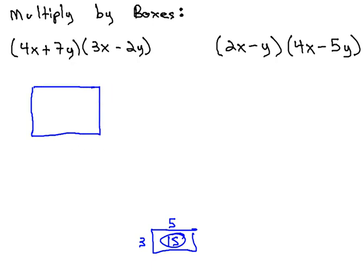Here, we're multiplying 4x plus 7y times 3x minus 2y. As we do that, we'll put the 4x plus 7y down the side, splitting it in the middle, and the 3x minus 2y across the top.